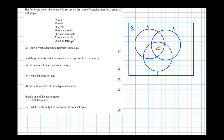It tells us 35 run and cycle. So working upwards, run and cycle is this overlap area here — I'll shade it in to make it clearer. This region needs to add up to 35. Since 25 is already in the centre, that tells us this region here is 10.